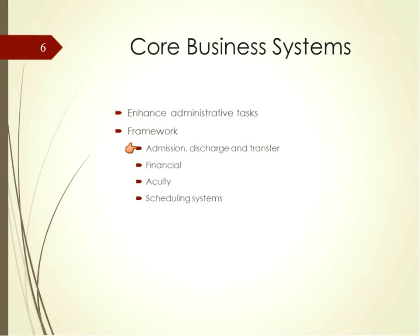The admission, discharge, and transfer systems provide the backbone structure for the other types of clinical and business systems. Admitting, billing, and bed management departments most commonly use ADT systems. These systems hold key information on which all other systems rely. For example, ADT systems maintain the patient's name, medical record number, visitor account number, and demographic information such as age, gender, home address, and contact information. Such systems are considered the central source for collecting this type of patient information and communicating it to the other types of health care information systems.